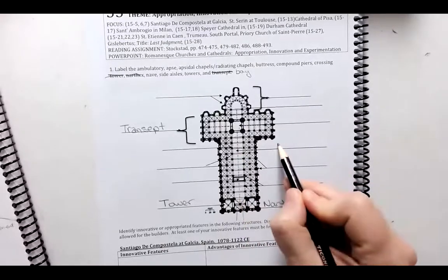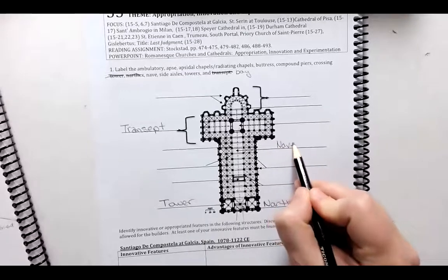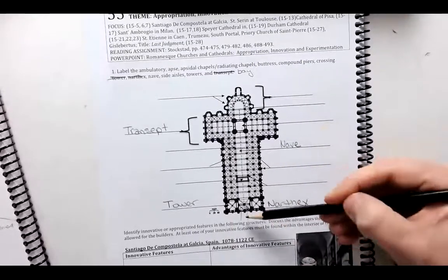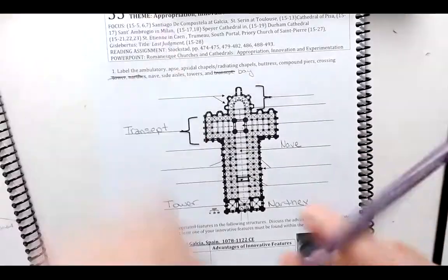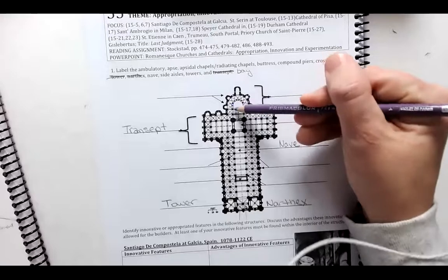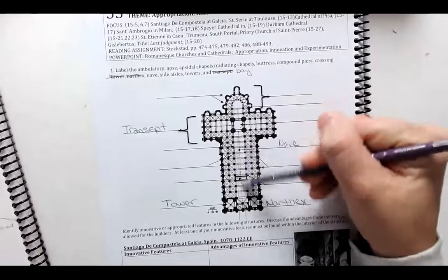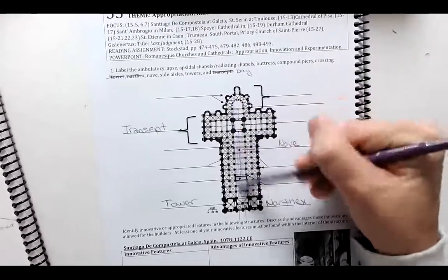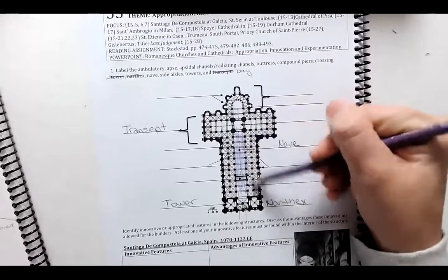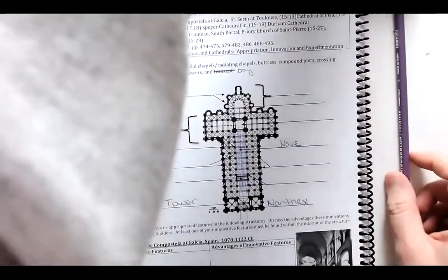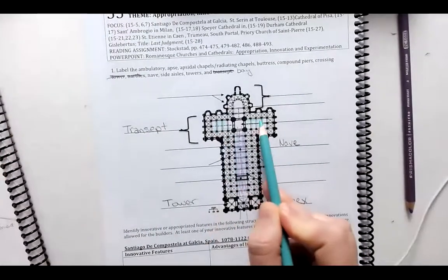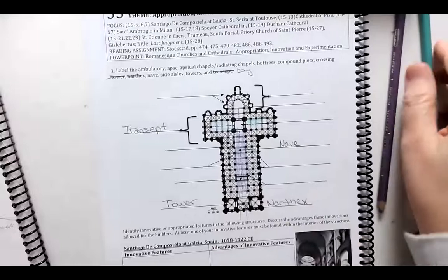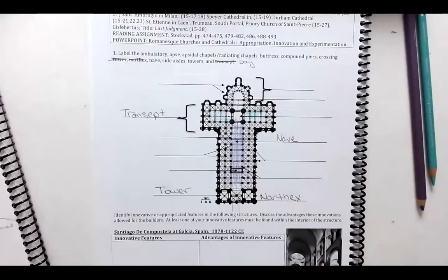We have our nave in the center — the central aisle of the nave is going to be used for long processionals. If you want, you could color in the nave and the transept on your diagram to help identify these parts.